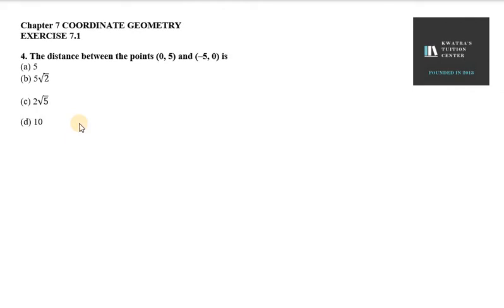Hello everyone, let's start with question number 4 of exercise 7.1. So it says the distance between the points (0, 5) and (-5, 0). So we have to find distance.